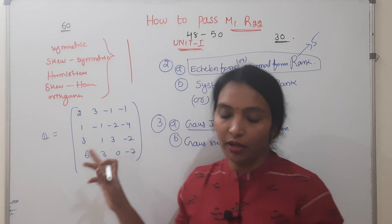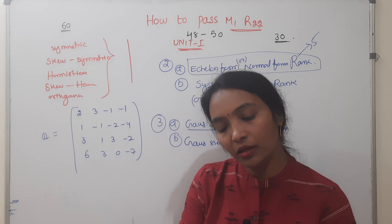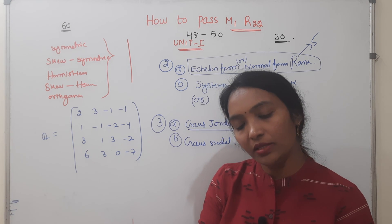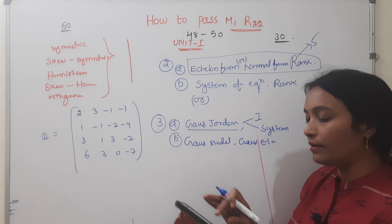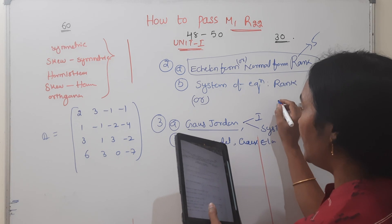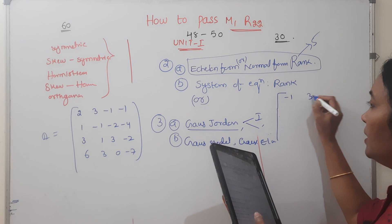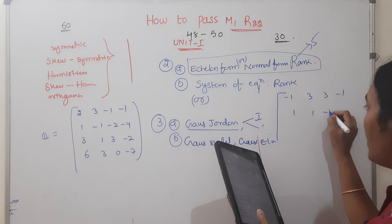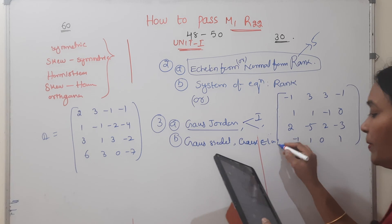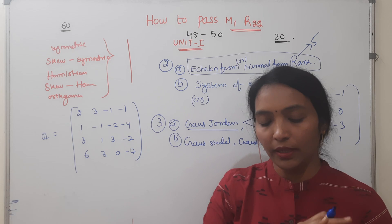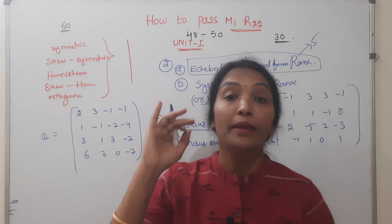From 2022 November — same bit repeated. From 2021 — Gauss-Jordan question also repeated: find the inverse of the matrix using Gauss-Jordan. The matrix is [-1, -1, 3, 3, -1, 1, 1, 1, 0, 2, -5, 2, -3, -1, 1, 0, 1]. This is also repeated. Next unit has a similar type: matrix [8, -6, 2, -6, 7, 4]. These are important repeated problems — already in the playlist.